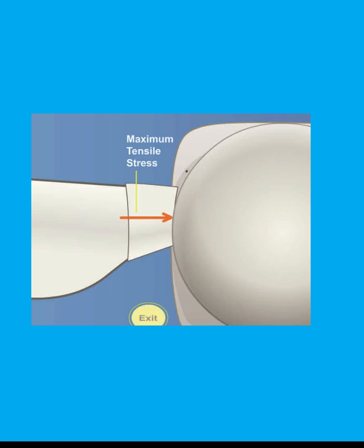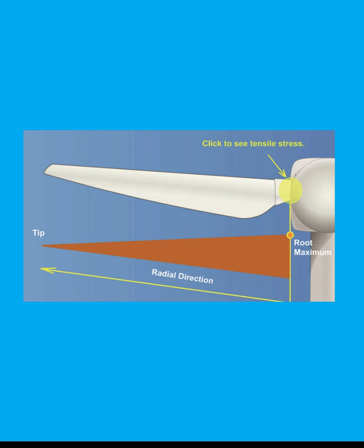The tensile stress builds up to reach its maximum at the joint between the blade and the hub. The centrifugal forces are always in the radial direction, causing tensile stress throughout the whole blade, from the root to the tip.